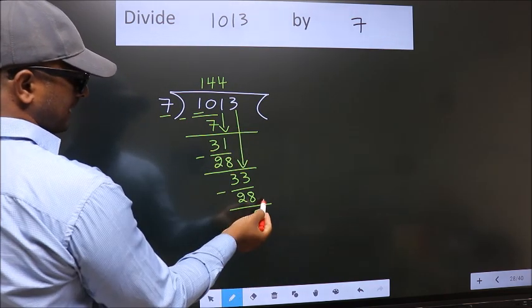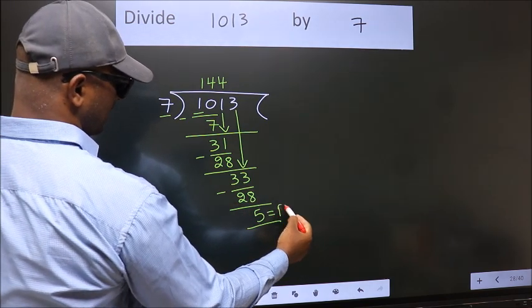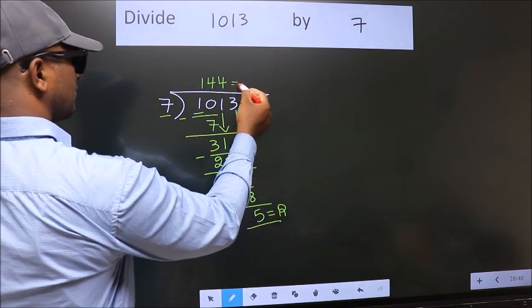No more numbers to bring down, so we stop here. This is our remainder. This is our quotient.